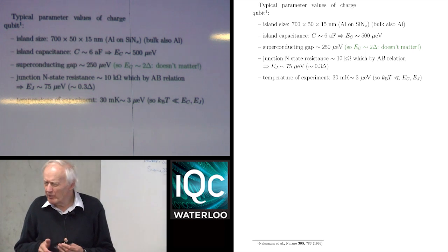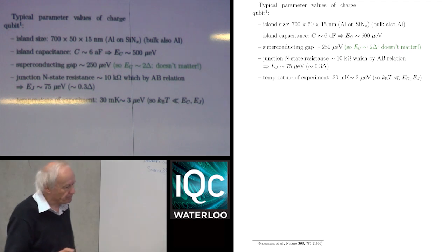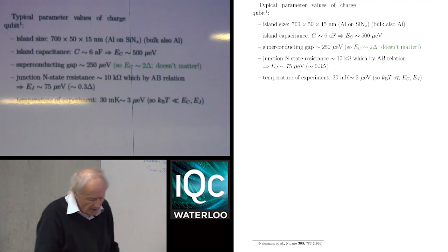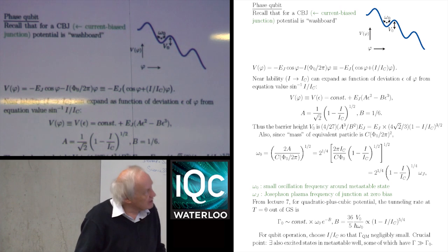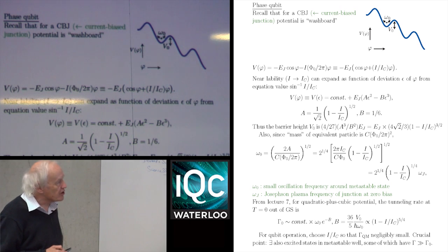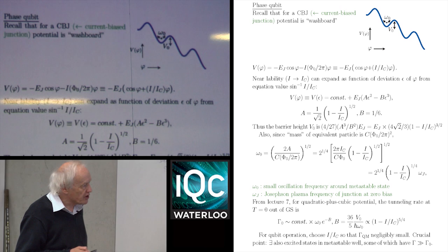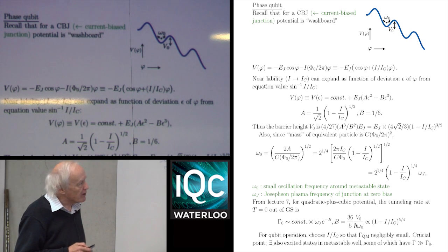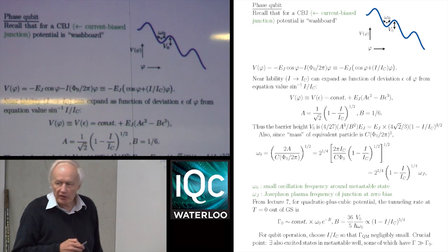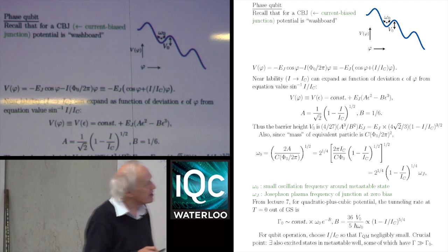The charge qubit is, in some sense, conceptually the simplest type of qubit. Now we go on to the phase qubit, which was in fact invented rather later than the other two, but it's interesting to consider here.